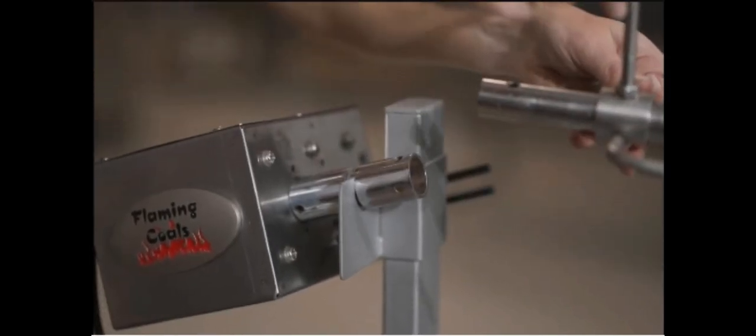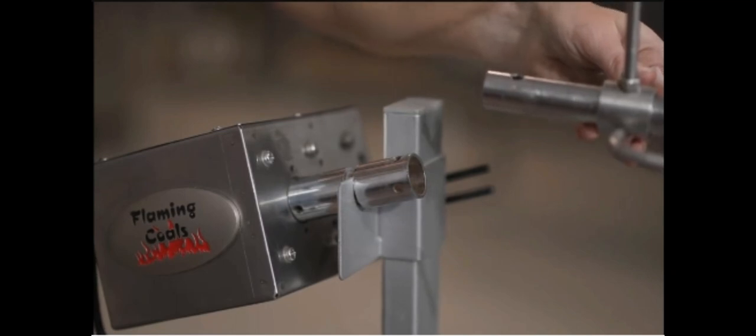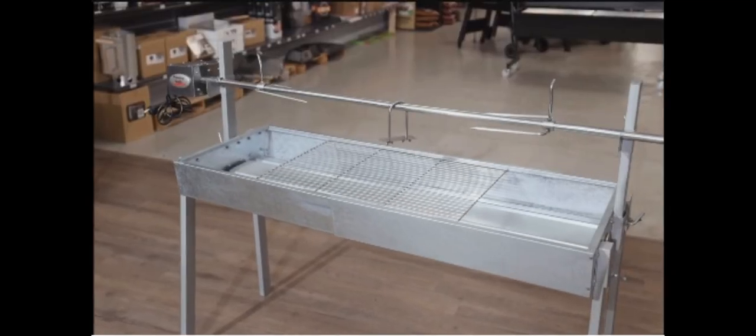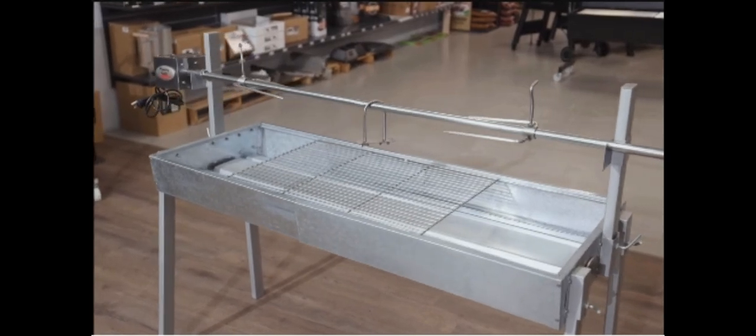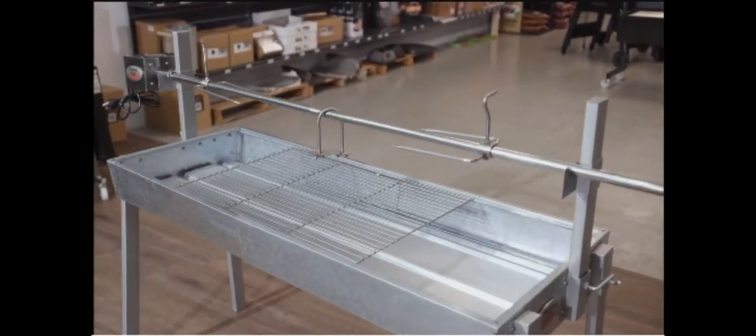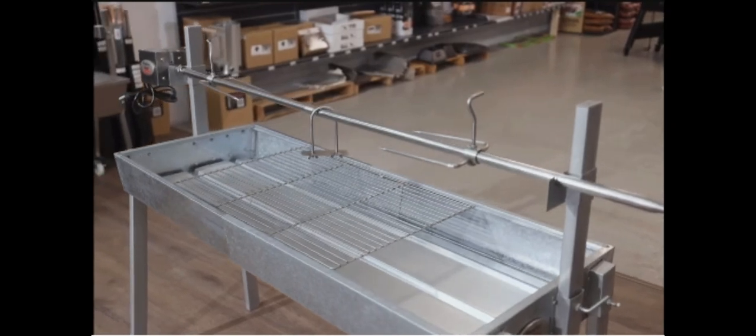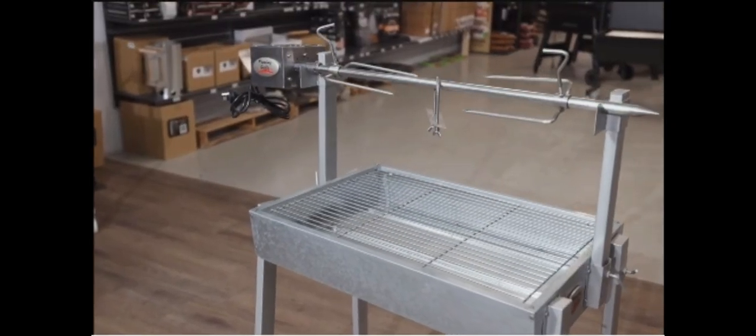All accessories are made from 304 food grade stainless steel, are easy to clean and dishwasher safe. The rotisserie comes with a 2 piece skewer which extends depending on whether you're cooking in its compact or full form. Two large prongs, one back brace and a cooking grill.